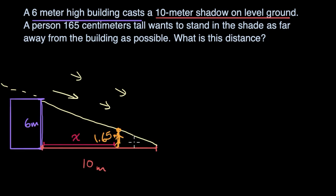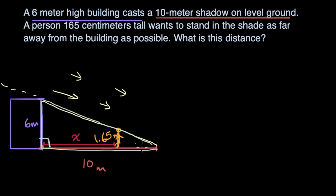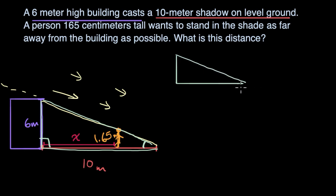You might be thinking it looks like we might be dealing with some form of similar triangles here — and you would be correct. One way to think about that is: I have this larger triangle right over here. This is a right angle, and let's call that some angle right over there. So I have that larger triangle with that angle and that right angle.